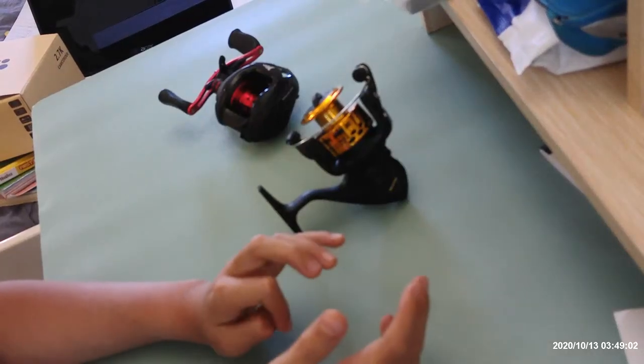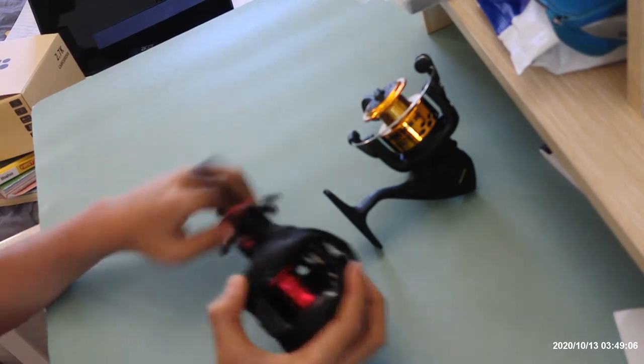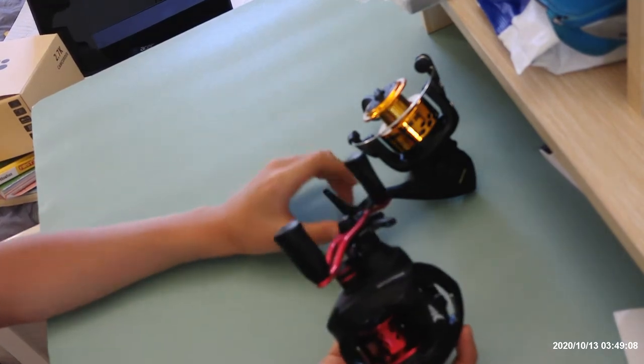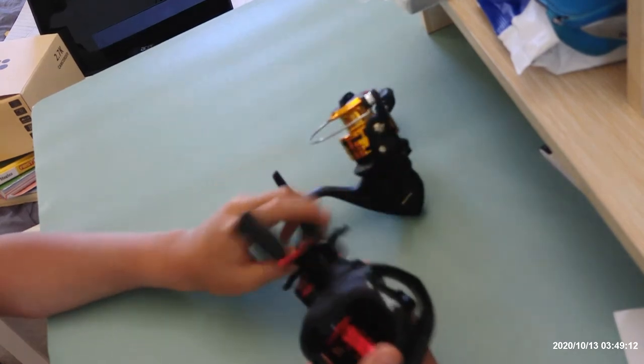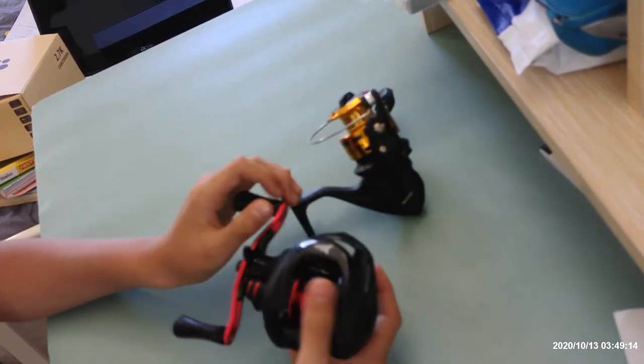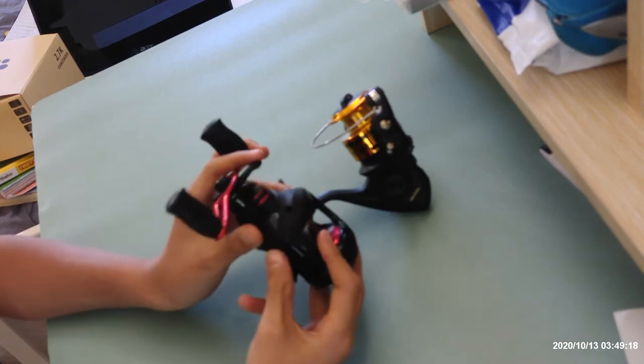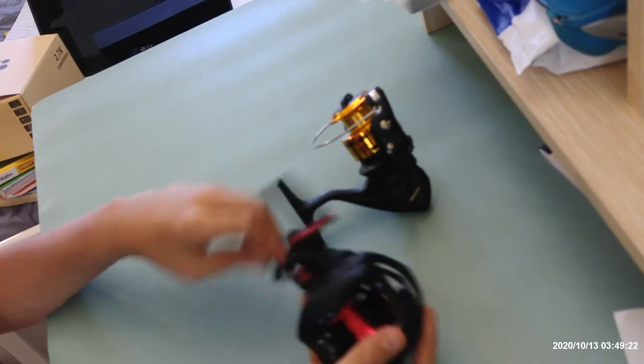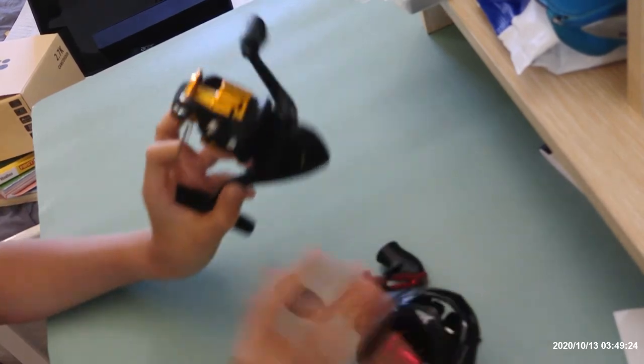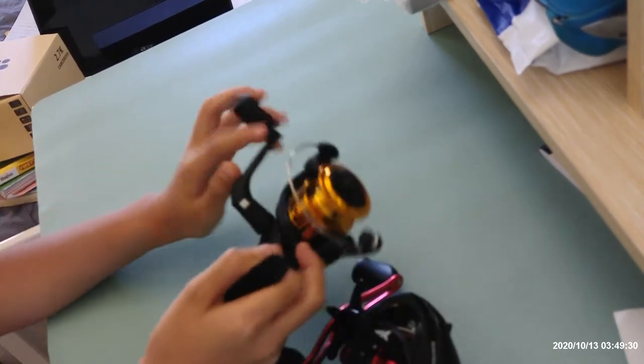Hello guys, today we're going to tell the difference between a spinning reel and a baitcasting reel. The first difference is the baitcasting reel has a thumb bar - you press it to cast and then reel. But this one doesn't. You just open the bail, cast, and then close the bail. That's all.